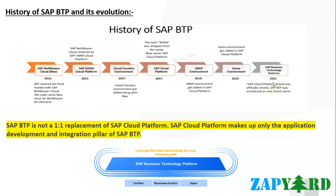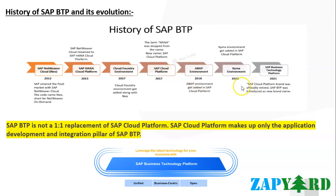SAP BTP is not exactly a one-to-one replacement of SAP Cloud Platform. Rather, SAP Cloud Platform makes up one of the application development and integration pillars of SAP BTP. You can say that SAP BTP was called SAP HANA Cloud Platform and then SAP Cloud Platform in the beginning. The idea was to provide a platform related not only to SAP HANA, but also to other open source technologies and services such as Java development or MongoDB usage. Since SAP thrives on real industry business processes, the name was finally changed to SAP BTP, indicating it is targeted for business requirements leveraging various technologies, including open source ones.